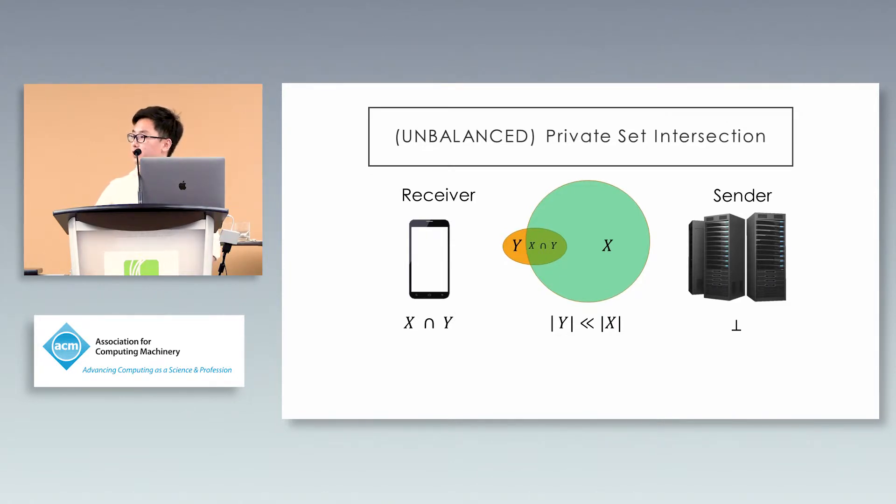Let me give a brief introduction of the unbalanced version of private set intersection. Two parties wish to find the intersection of their private sets without revealing anything else. In the unbalanced case, we assume one party has a much smaller set. The party with the smaller set is the receiver, who learns the output. The sender learns nothing.